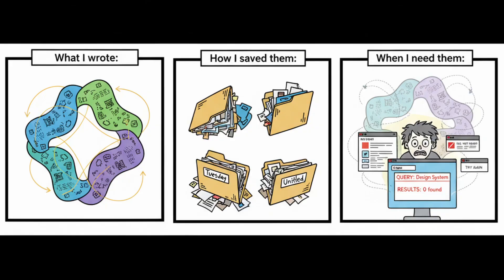Here's a great example. I had three different notes about design system scalability from different meetings that were probably a few months apart — never connected them. When I actually started thinking about something strategic related to design systems, I basically had to start from scratch, because those insights were buried in notes titled Tuesday Staff Meeting or Thoughts on Components. The breaking point was when I calculated I was spending hours a month just organizing and not actually using my knowledge. That's when I knew the system was running me and not the other way around.